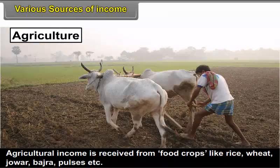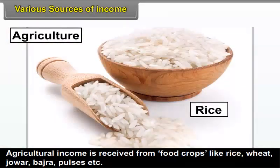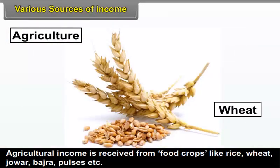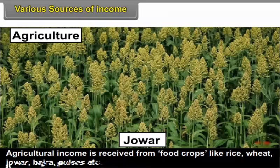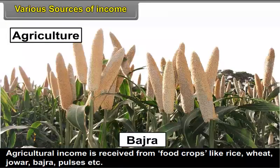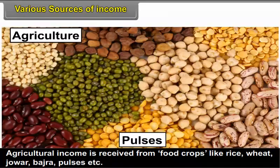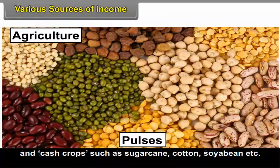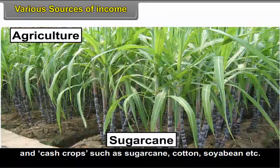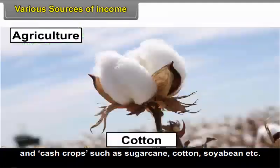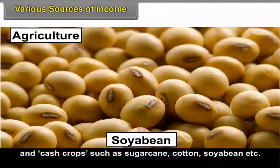Agricultural income is received from food crops like rice, wheat, jowar, bajra, pulses, etc., and cash crops such as sugarcane, cotton, soybean, etc.